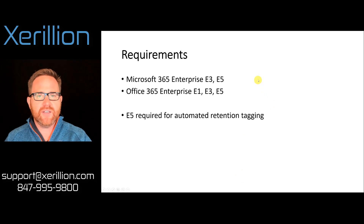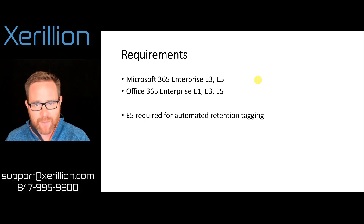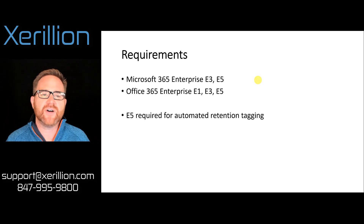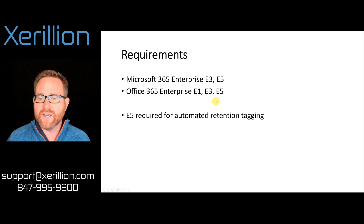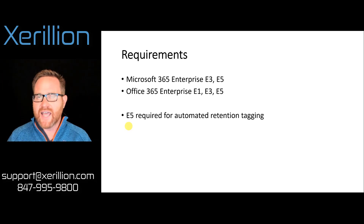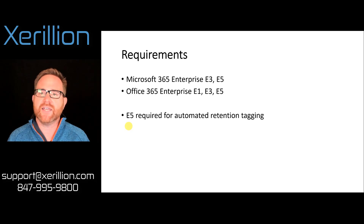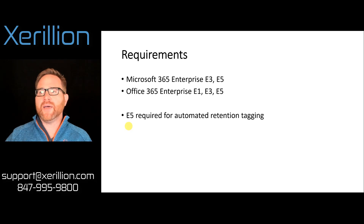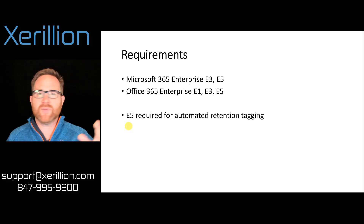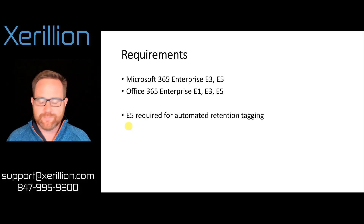To have these retention capabilities and backup features in Office 365, you're going to need Microsoft 365 Enterprise E3 or E5. As a side note, if you want to set up automated tagging of documents based on words in the documents — for example, any document with the word 'signed' in the title is automatically tagged with a forever retention policy — you get that with E5.